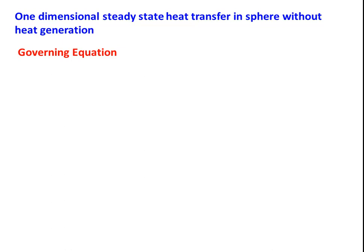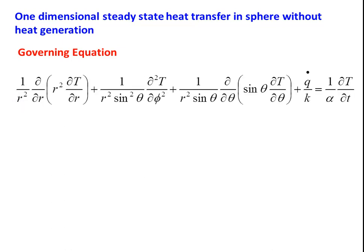The one-dimensional steady state heat transfer in a sphere without heat generation — the general heat conduction equation for the spherical system is: (1/r²)(∂/∂r)(r² ∂T/∂r) + (1/r² sin²θ)(∂²T/∂φ²) + (1/r² sinθ)(∂/∂θ)(sinθ ∂T/∂θ) + q̇/k = (1/α)(∂T/∂t). That is the general heat conduction equation for the spherical system, and we simplify this equation for the present situation.